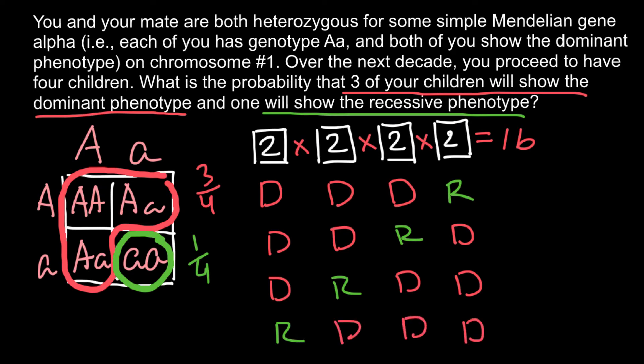If you said the probability would be 4 out of 16, this would be the wrong answer, because the probability of the dominant phenotype and the recessive phenotype is different. For the dominant phenotype, the probability is 3 quarters, and for the recessive phenotype it is 1 quarter. If the probability of both phenotypes were the same, our answer would be 4 out of 16, but they are not.